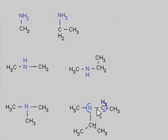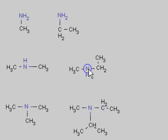Notice that the primary amine has two hydrogens, the secondary has one hydrogen, and the tertiary has no hydrogens on the nitrogen.